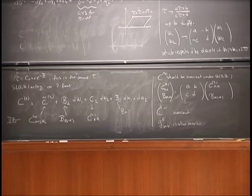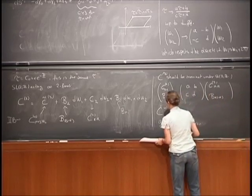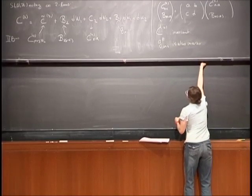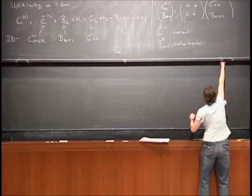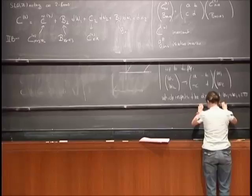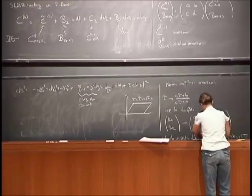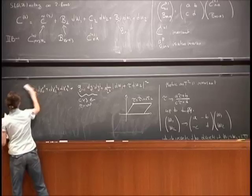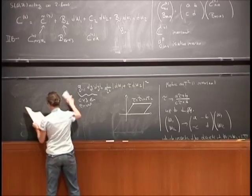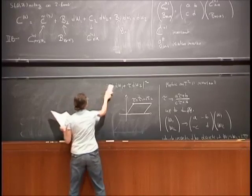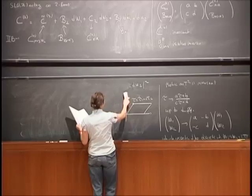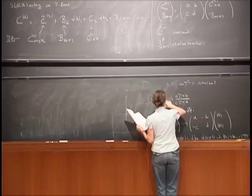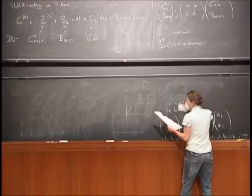This is the geometric origin of the SL(2,Z) symmetry of Type IIB: it arises from the modular symmetry of the torus in the M-theory lift. We assumed X is a Calabi-Yau threefold and τ constant, but that is in general not necessary.